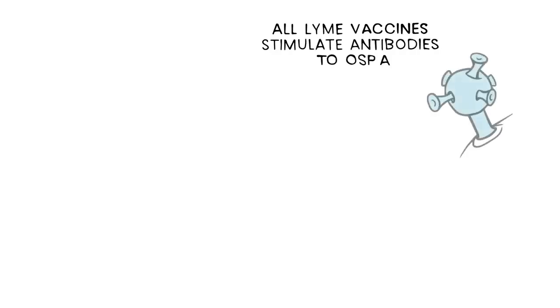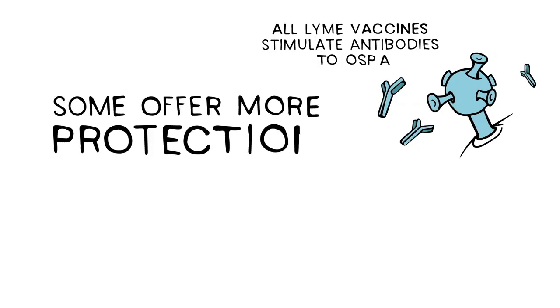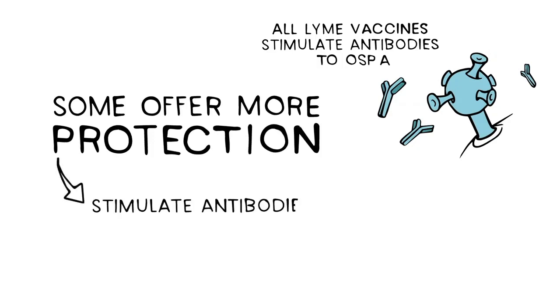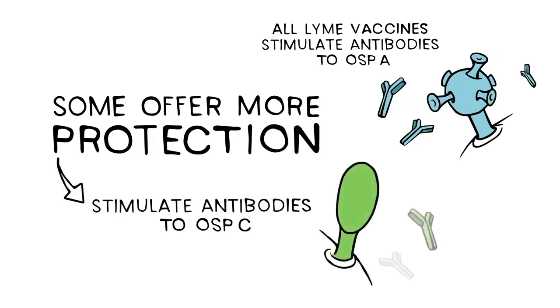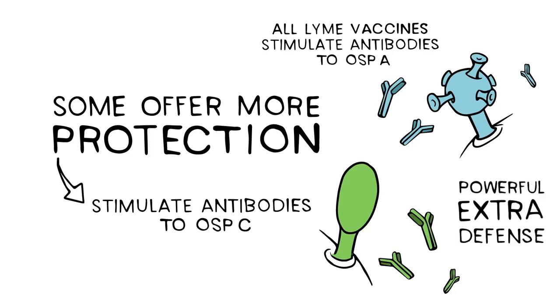Though all canine Lyme vaccines target the bacteria when they are expressing OSP-A, some offer even more protection by targeting the bacteria when they are expressing OSP-C as well. It is a powerful extra level of defense.